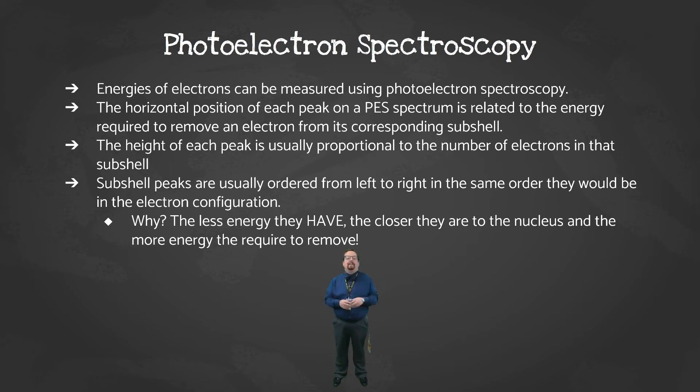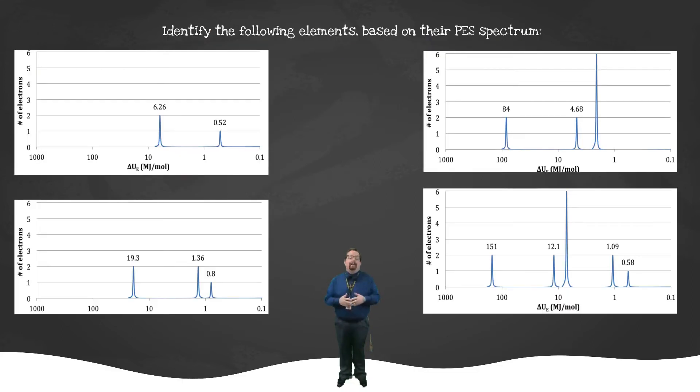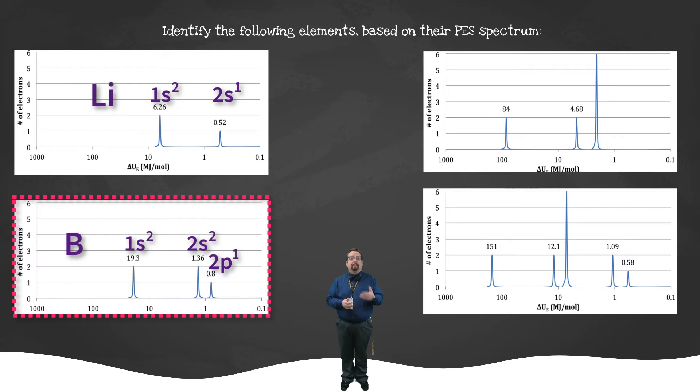Let's look at some of these PES spectrums. You'll likely be given a spectrum like one of these and asked to identify the element. To do so, we simply start with the first peak and assume that that's the 1s subshell. For our first element here, it looks like there are two electrons in the 1s subshell, and then the next peak would be the 2s subshell, and there's only one electron in there. That makes this element lithium. Next, we have 2 in the 1s peak, 2 in the 2s, and only 1 in 2p. This would represent boron.